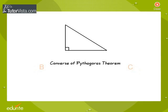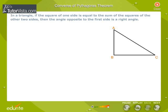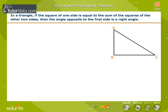Converse of Pythagoras Theorem. Statement of the Theorem: In a triangle, if the square of one side is equal to the sum of the squares of the other two sides, then the angle opposite to the first side is a right angle.